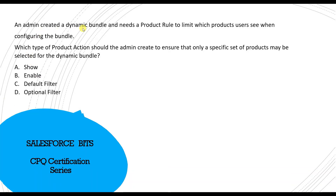Moving on: an admin created a dynamic bundle and needs a product rule to limit which products users see when configuring the bundle. Which type of product action should the admin create to ensure that only a specific set of products may be selected from the dynamic bundle? So you want to create a rule with filters — for example, to select only electronic, hardware, or software items. What kind of filter should you use?